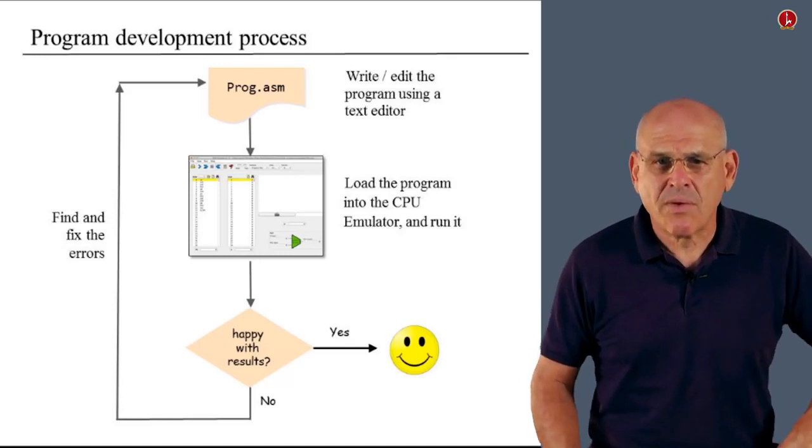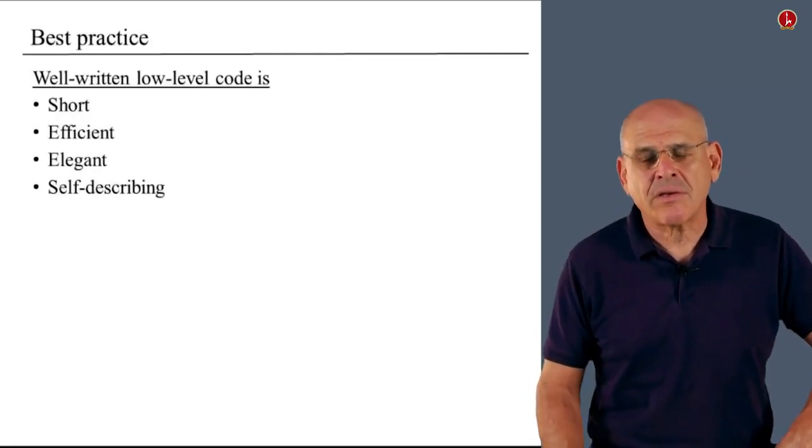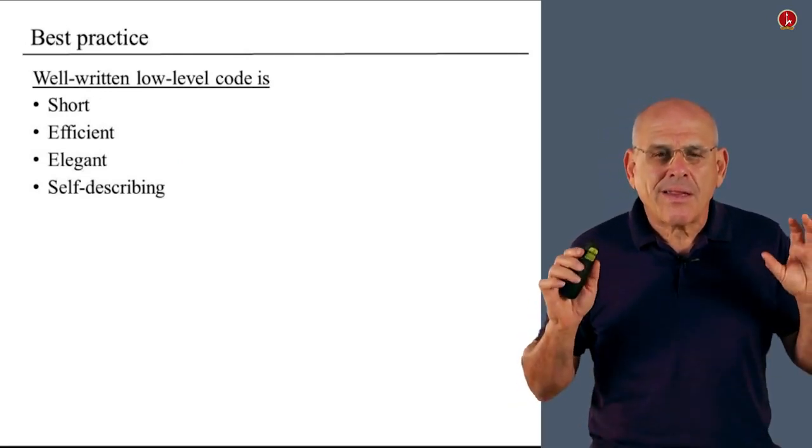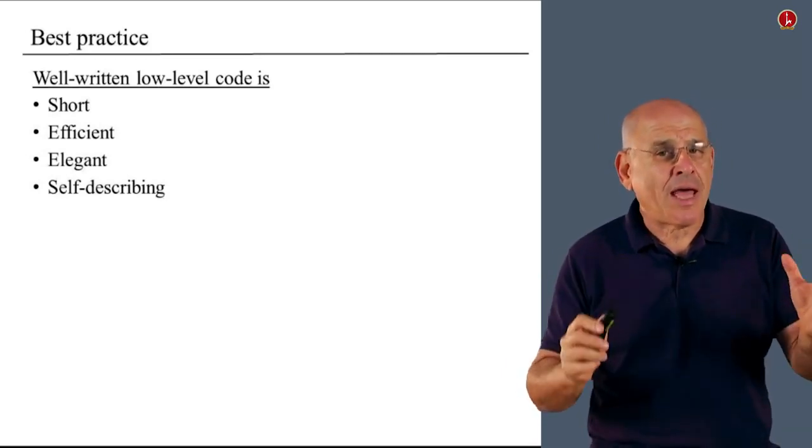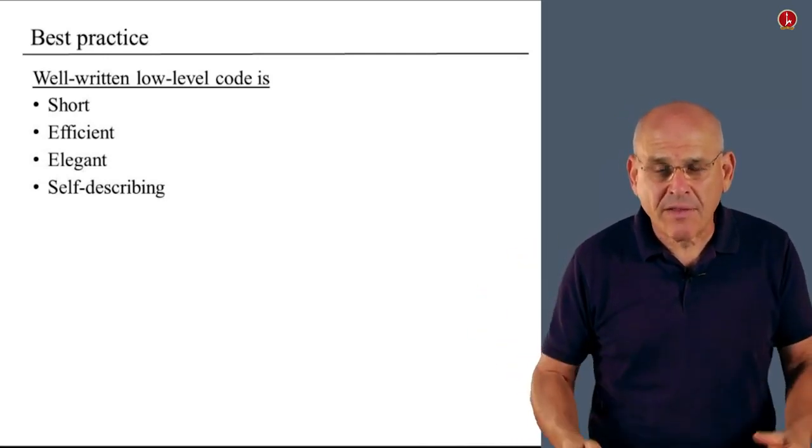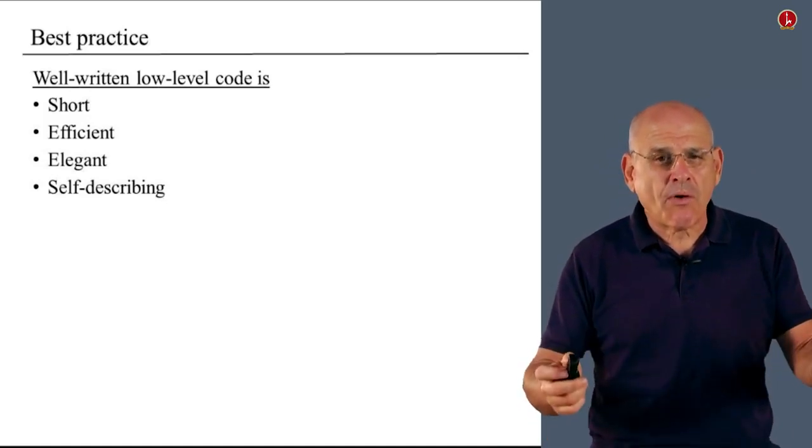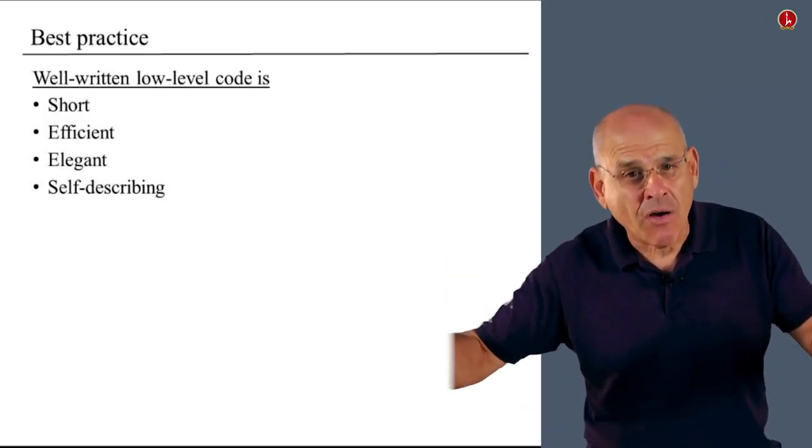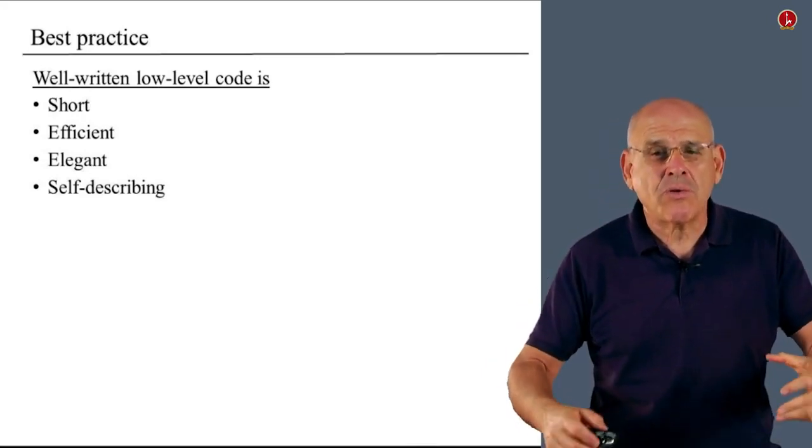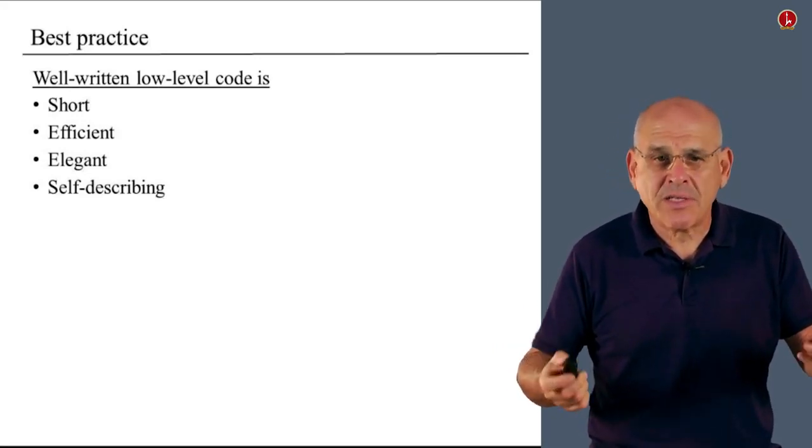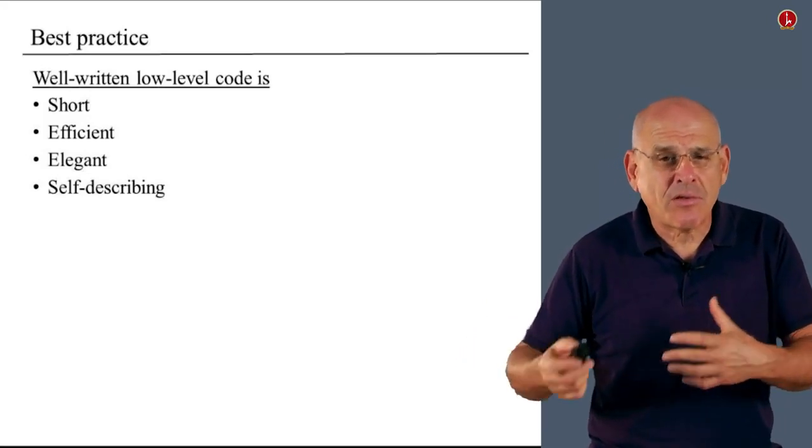So this is the general mechanics of developing a program using a CPU emulator and a text editor, and as you see, it's quite simple and friendly. All right, finally, I want to say a few words about best practice and advice on do's and don'ts. There is no reason really to think about machine language programs as some sort of a strange animal. It's yet another example of a programming artifact. And all the principles that applied to writing programs in a high level language also apply at the low level. We expect your programs to be short or not unnecessarily long. They should be short, they should be efficient, they should be elegant, and they should be self-describing.